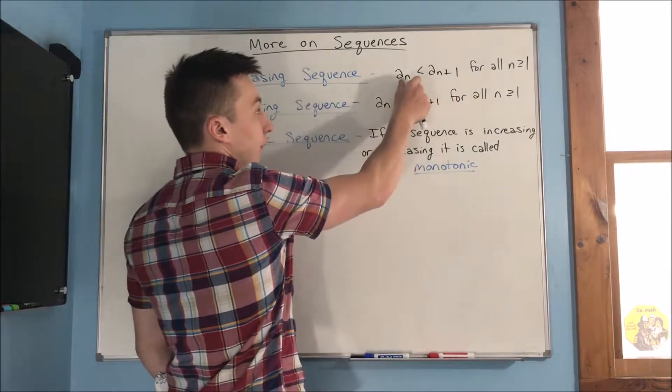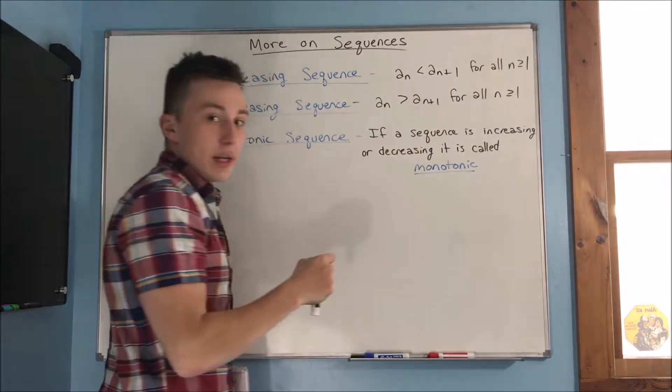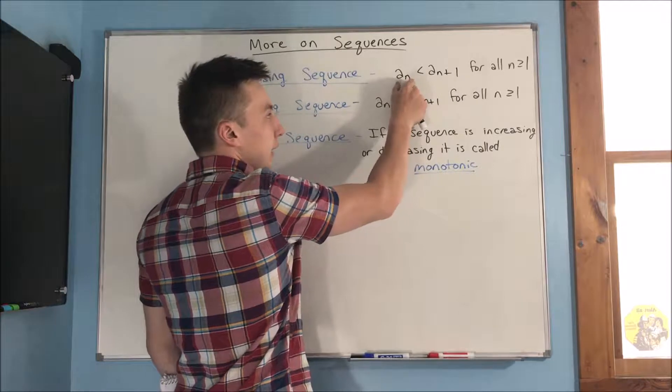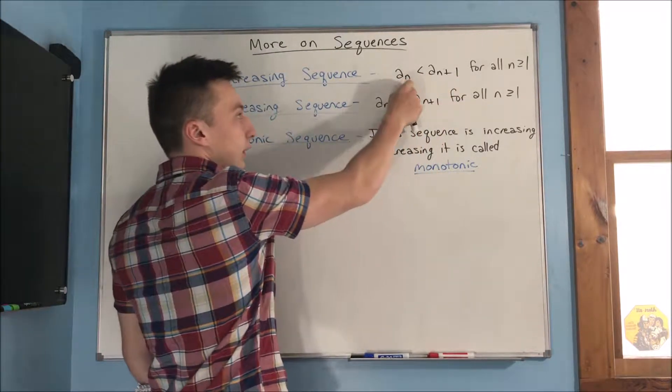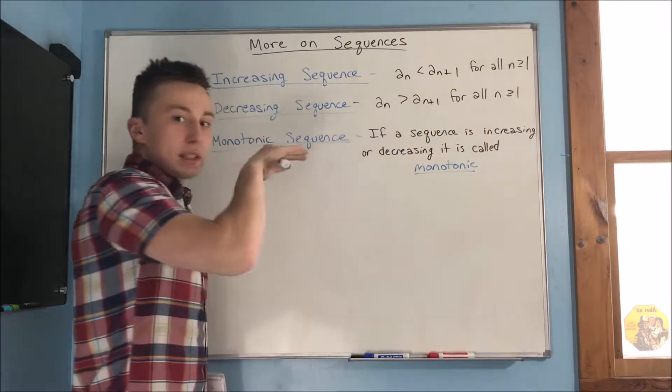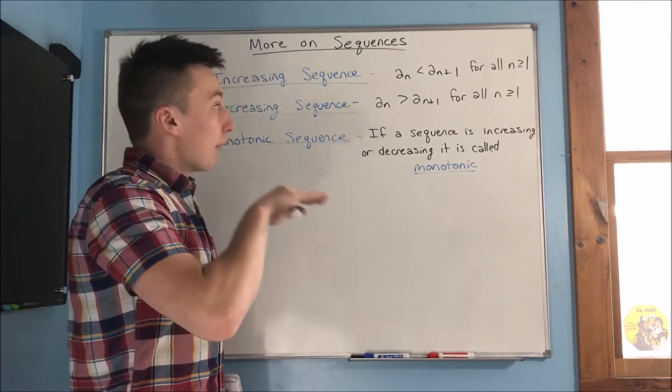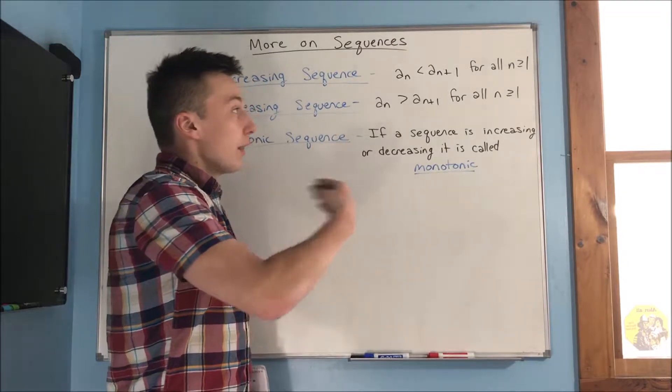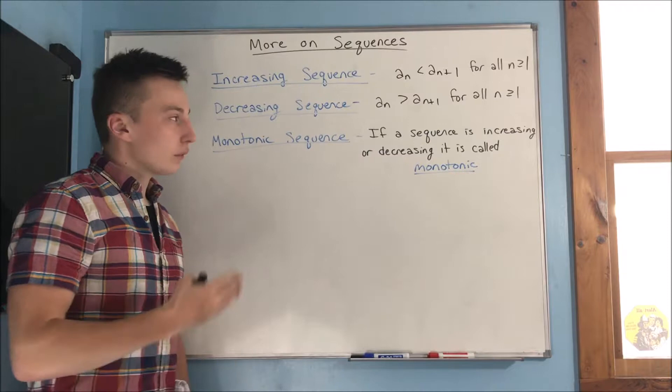Because if a sub n is always less than the term after it, so let's say we're talking about the second term here. If the second term is less than the third term, and the third term is less than the fourth term, putting that variable there allows us to talk about every single term. If every single term is less than the term that comes after that one, then it's going to be increasing for all of our terms.